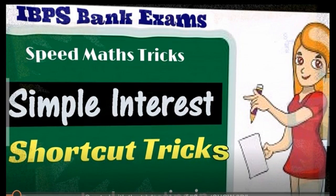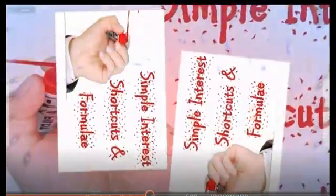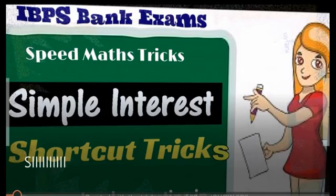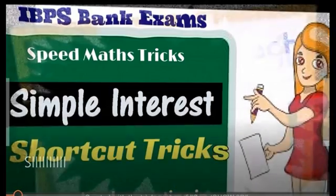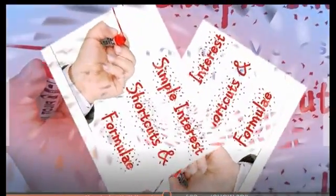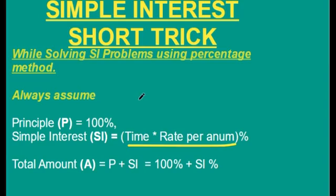In this video I want to explain some shortcut tricks and formulas on simple interest. Solving simple interest problems using the percentage method is quicker than normal methods. In simple interest problems, always assume principal equal to 100%, simple interest equal to time multiplied by rate per annum percent, and total amount equal to principal plus simple interest, which equals 100% plus simple interest percent.